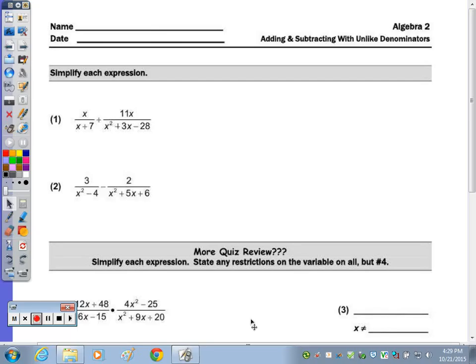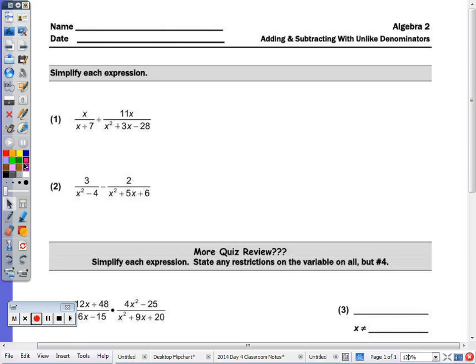At the top of the page the directions say to simplify and if you recall from the notes from last class, anytime there's an x squared in the denominator, because I need to get common denominators in order to add or subtract fractions, we need to factor. So this factors to x plus 7 times x minus 4.